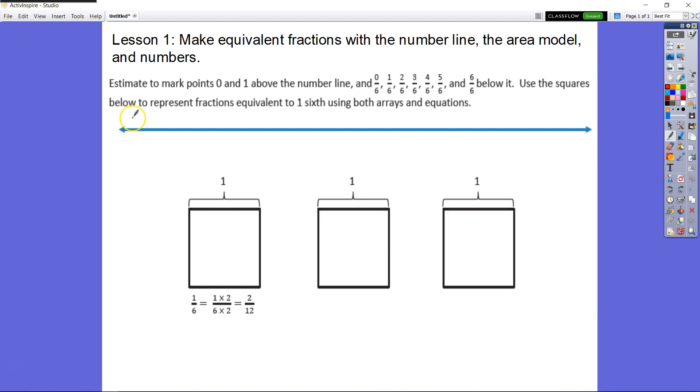First thing we need to do is mark our 0 and our 1. We know that all of these fractions are equal to or less than one whole, so we can go ahead and put our 1 and our 0 in. Next, it asks us to mark our fractions, so we know we have 6, we're talking about sixths, and 1 is equal to 6/6, 0 is equal to 0/6. So we need to have 1/6 all the way to 5/6 in between.